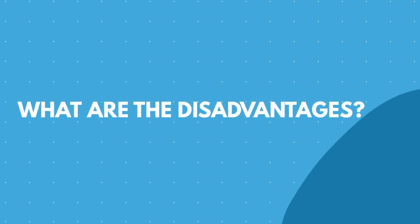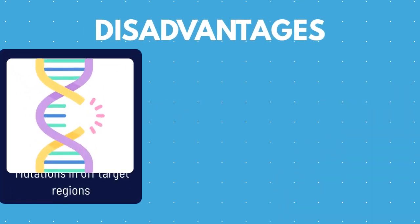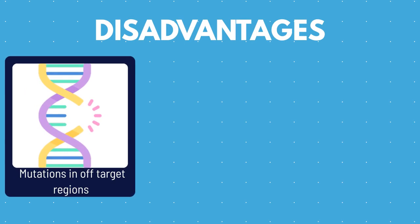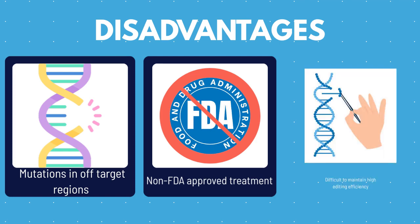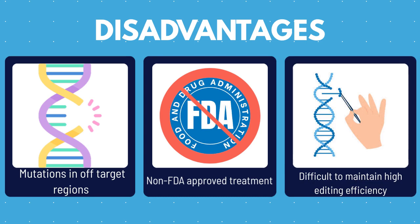Now, what are the disadvantages? One of the main disadvantages of using CRISPR to treat sickle cell disease is that because CRISPR involves gene editing, this could introduce a genetic mutation in off-target regions of the DNA, which could lead to greater adverse effects compared to the benefits of this treatment. Another disadvantage is that the use of this technique is relatively new, with the first successful treatment occurring in 2021, and therefore it is currently not FDA approved. Finally, since CRISPR is a relatively new technique for clinical applications, not all labs have gene editing technology, and therefore optimizing the CRISPR protocol to maintain a high editing efficiency can be time-consuming and challenging.